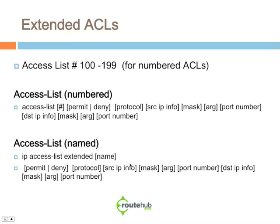Extended ACLs use numbers 100 to 199 for numbered ACLs. The syntax is a little bit longer. Here we say 'access-list' and the number, which is 100 through 199, then permit or deny. We specify the protocol, which could be TCP, UDP, IP, and there are a lot of others like EIGRP or even GRE. Then the source IP information — host or subnet — and the wildcard mask, similar to standard ACLs. The argument could be something like equal to, greater than, or less than. We'll talk about that further in another configuration example.